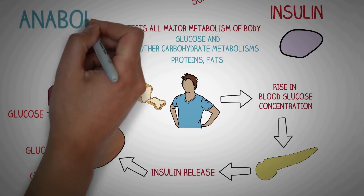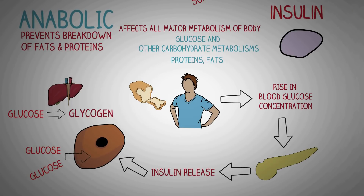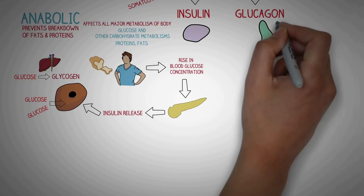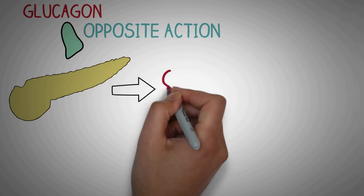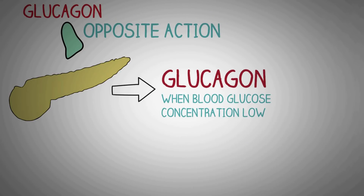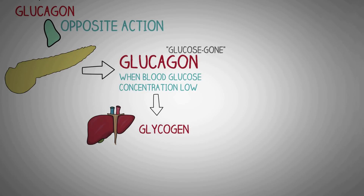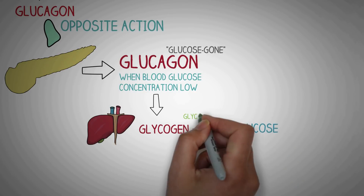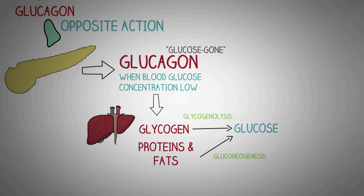Insulin is known as an anabolic hormone — the opposite of catabolic — since it prevents the breakdown of both fats and proteins in the body. Glucagon, on the other hand, works in the opposite way. It is mainly released when glucose is low in the blood, causing breakdown of glycogen to glucose in the liver (glycogenolysis), and the conversion of amino acids and fats into glucose (gluconeogenesis), with the overall effect of increasing blood glucose concentration.